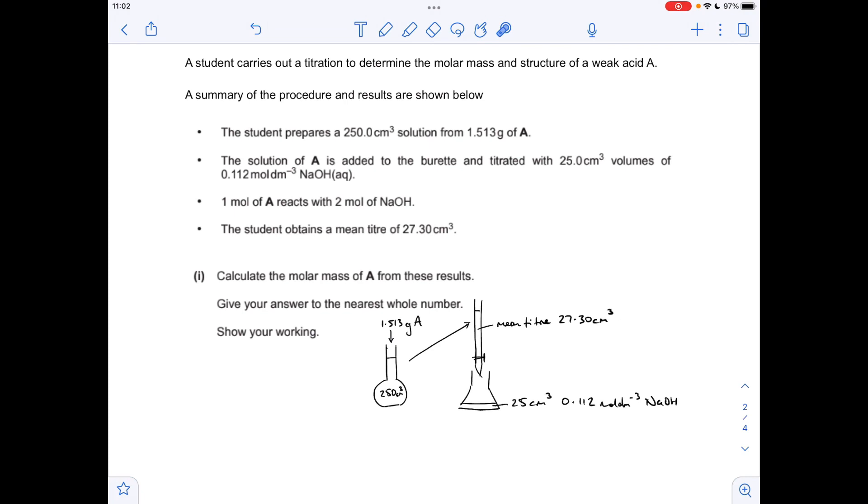Moving on to the titration now. You can see I've got my usual diagram to visualise the information. So they've dissolved this many grams of A into 250 cm3, it's gone into the burette and it's titrated against this volume of this concentration sodium hydroxide. Mean titrate 27.30 cm3 and the mole ratio for the reaction is given here. So we're not given the equation, we're given the mole ratio.